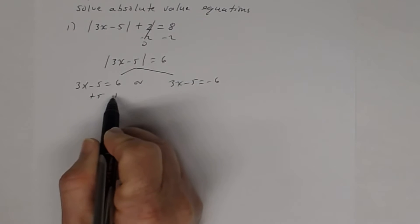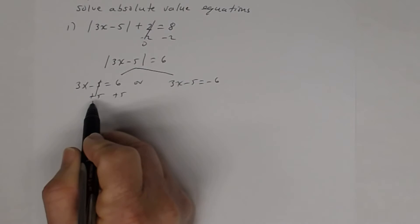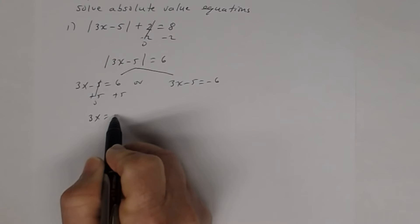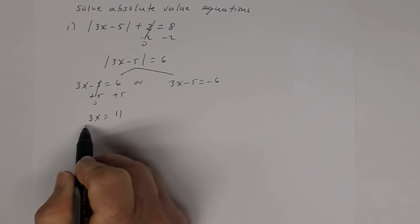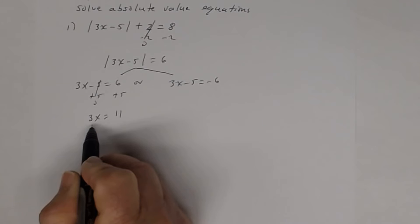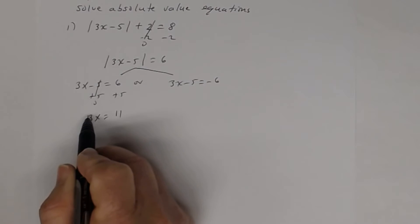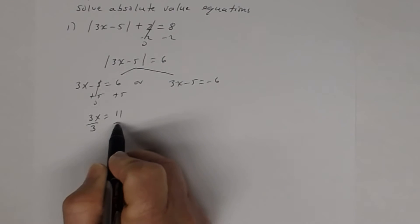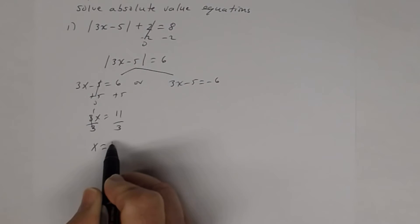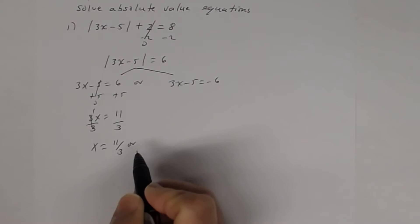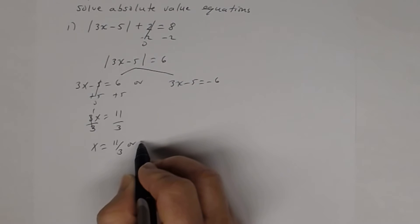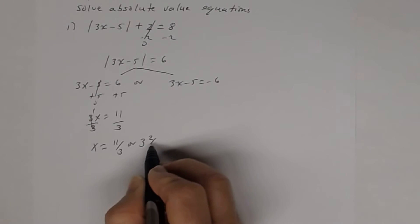For the first equation, add 5 to both sides. Combining like terms, 3x equals 11. Then divide both sides by 3, since the coefficient of x is 3 and the opposite of multiplication is division. So x equals 11 thirds, or written as a mixed number, 3 and 2 thirds.